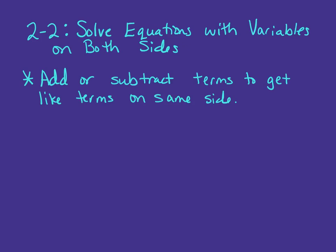Lesson 2-2: we're going to solve equations that have variables on both sides of the equation. To do this, we're going to get like terms on the same side of the equation, and we can always do that by adding or subtracting a term to move it.